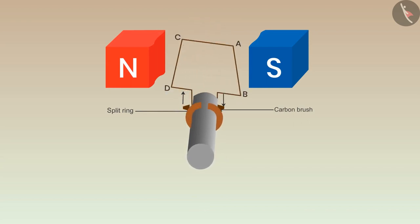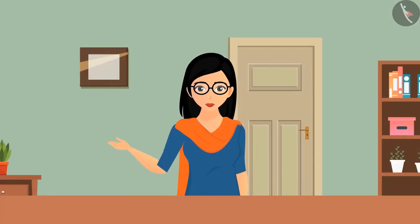These generators are known as DC generators. DC generators are commonly used as alternators in automobiles. Their work is to charge batteries.